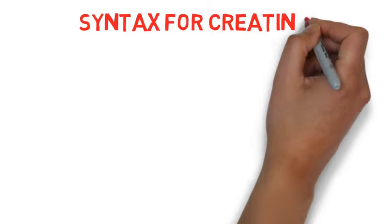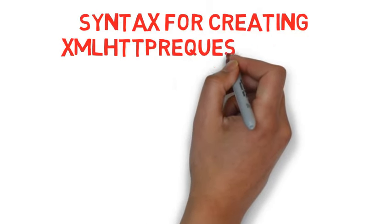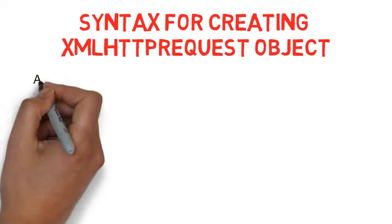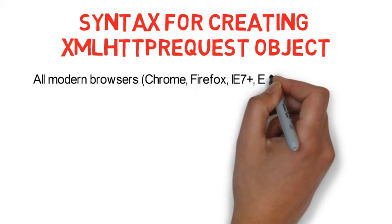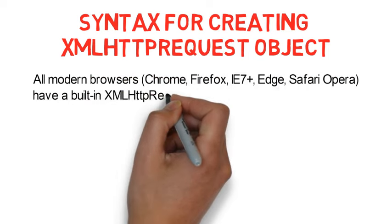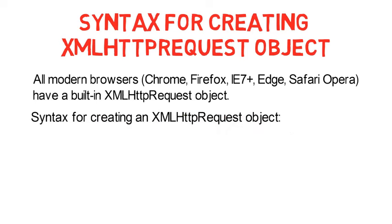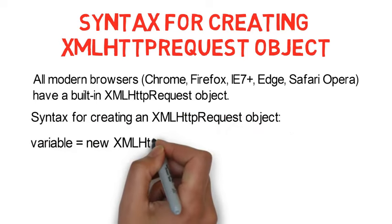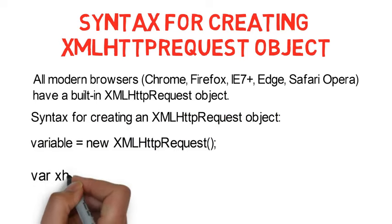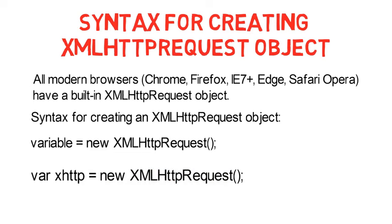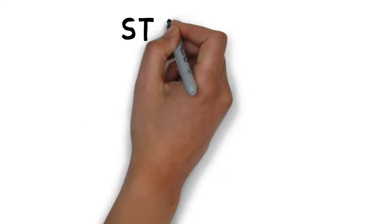Let me show you the syntax for creating the XMLHttpRequest object. All modern browsers — including Chrome, Firefox, Internet Explorer, Edge, Safari, and Opera — have a built-in XMLHttpRequest object. The syntax is: declare a variable using the var keyword and initialize it to a new XMLHttpRequest instance. For example: var xhttp = new XMLHttpRequest().